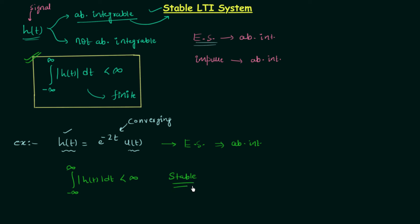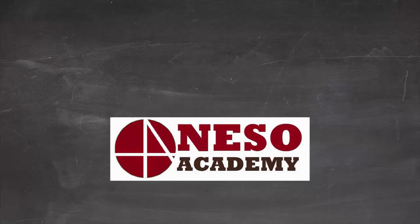The LTI system is stable in nature, and you have to follow the same process every time: just focus on the energy signal. If the given impulse response is an energy signal, the system is stable; if it is a power signal or any neither-energy-nor-power signal, it is an unstable LTI system. This is all for this lecture. In the next lecture we will solve a few more problems for a clear understanding of stable LTI systems.